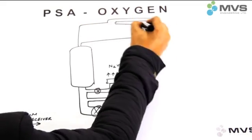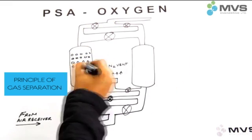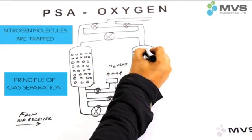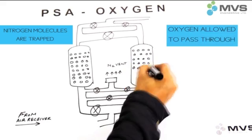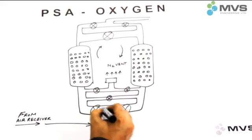PSA oxygen generation technology works on the principle of gas separation by passing air through molecular sieves where nitrogen molecules are trapped and oxygen is allowed to pass through. PSA technology comprises two towers filled with alumina and molecular sieves.